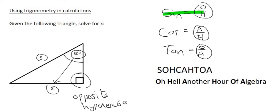So what you then say is that the sin of 50 is equal to the opposite, which is x, over the hypotenuse, which is 5.